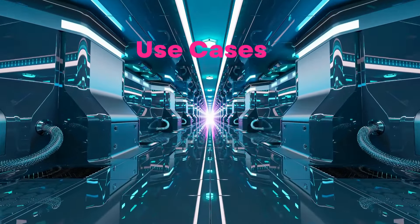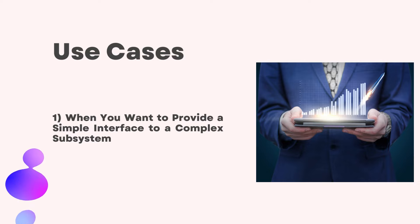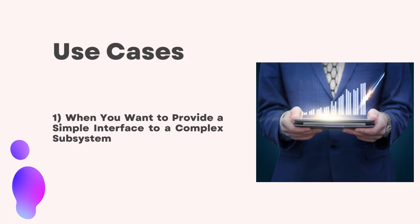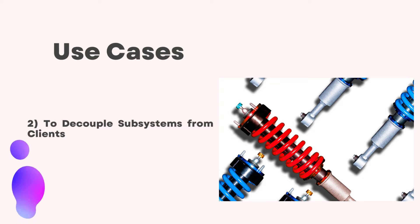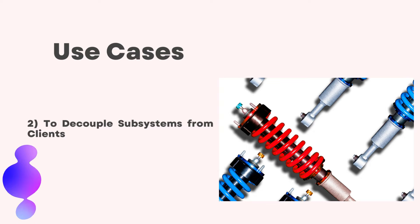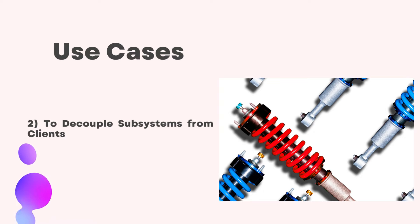Let's continue with use cases — when should we use the facade pattern? Firstly, when you want to provide a simple interface to a complex subsystem, just like a facade provides a simplified view of a building. Secondly, to decouple subsystems from clients: just as a building facade separates the building's interior from the exterior, the facade pattern can be used to decouple a subsystem from its clients and other subsystems, enhancing subsystem independence and portability.